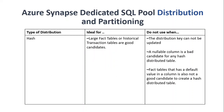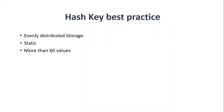Hash distribution is ideal for large fact tables and historical or large-sized tables. However, don't use it if the table doesn't have a column that can serve as a distribution key. The distribution key cannot be updated, so avoid picking a column that changes frequently. Nullable columns are not good distribution key candidates, and columns with default values are also poor choices, as they would concentrate too many records in a single distribution.